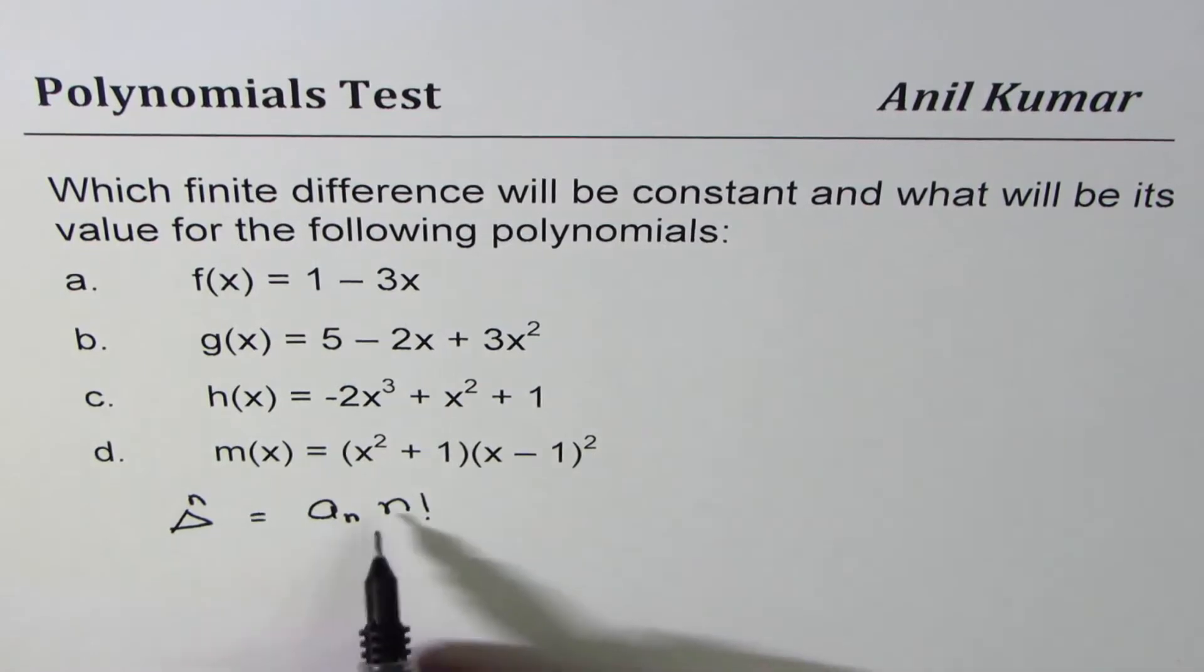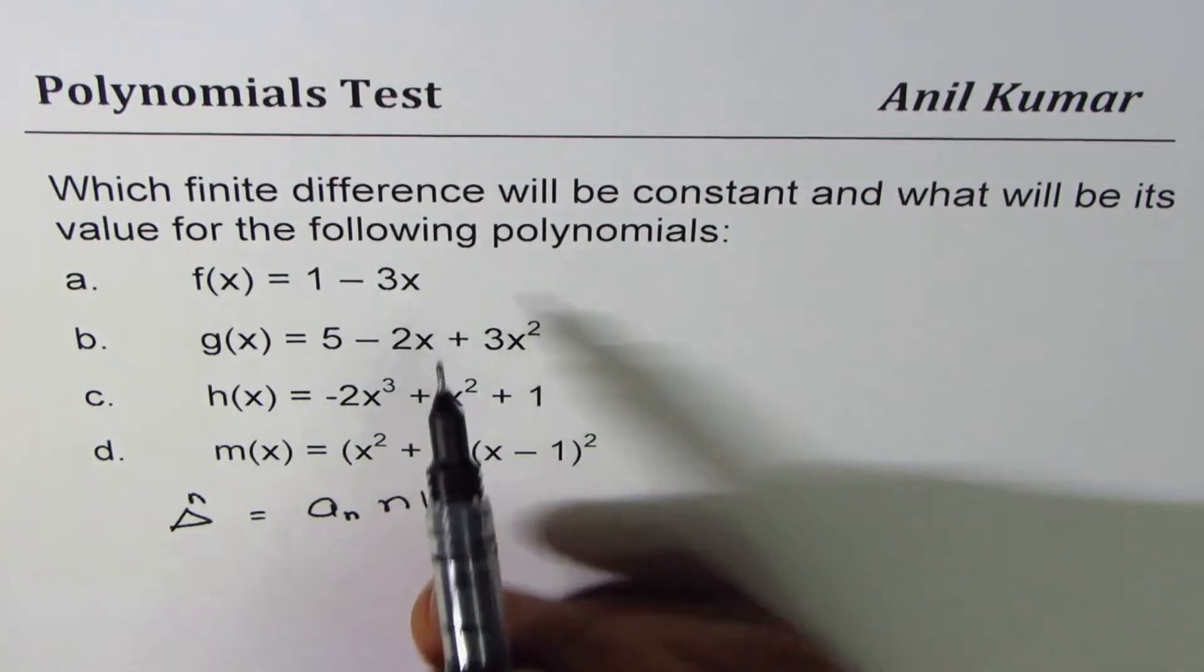When I say n factorial it means you have to multiply. If I say 4 factorial it means 4 times 3 times 2 times 1. So let's figure it out.